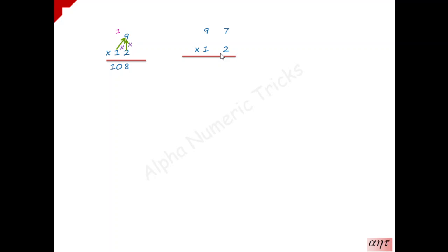Using Vedic mathematics tricks we can get the answer within 5 seconds. Now we will see how to get the answer using the trick. The trick is: first multiply 7 into 2, which is 14 — 4 is written, 1 is carried forward. Now multiply 2 by 9, which is 18, and this 18 is added with the immediate right number of 9, which is 7.